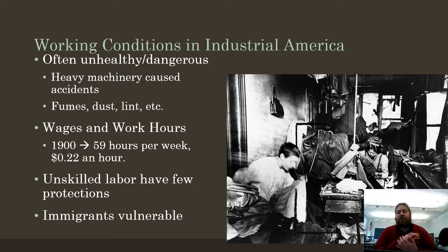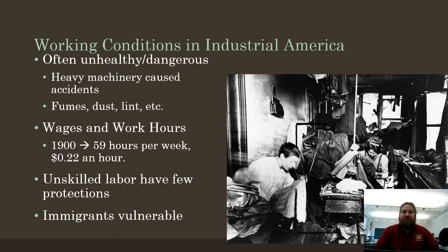Wages are very, very low. The average in 1900 is about a 59-hour work week — more than the 40 hours we consider standard today — and you'd be paid about 22 cents an hour, which is really not a lot to live on. If you are an unskilled laborer, you have almost no protections. There are very few laws dealing with labor, there's no disability yet, and as a worker you are very vulnerable to exploitation.